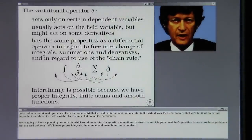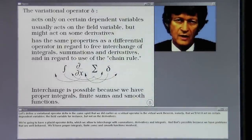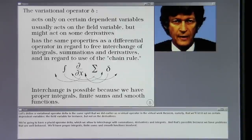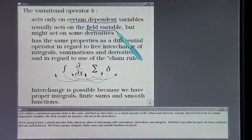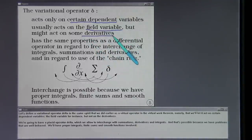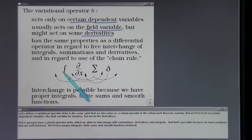We define a variational operator delta in the same spirit as the virtual operator in the virtual work theorem — it acts on certain dependent variables such as the field variable, but not on the derivatives. We allow this placid operator delta to interchange with summations, derivatives, and integrals, because we have well-behaved problems with proper integrals, finite sums, and smooth functions involved.